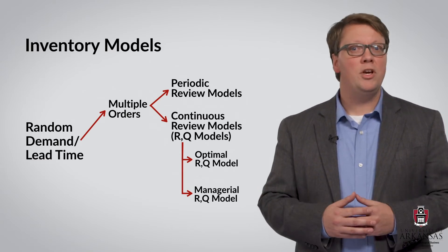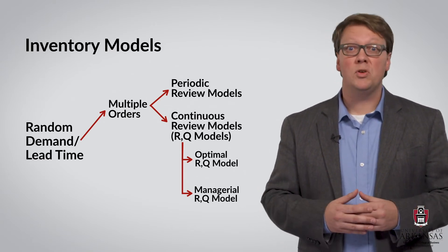To understand how the RQ model works, let's look at a simple graph that plots inventories over time. We start with some inventory level and then sell off this inventory as customers make purchases. At some point, our inventory runs low, and it is time to place a replenishment order. This point is what we call the reorder point, or simply R.